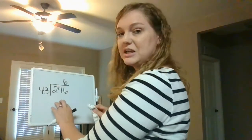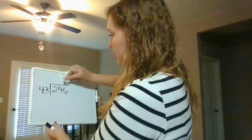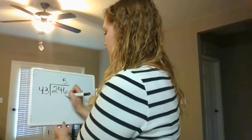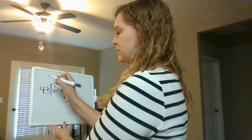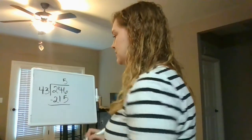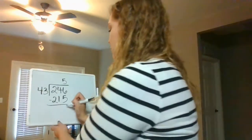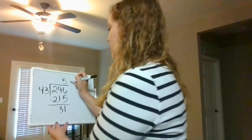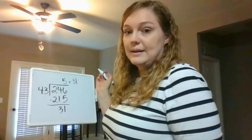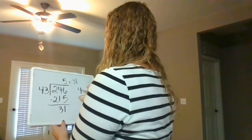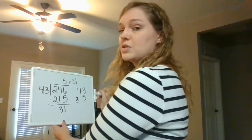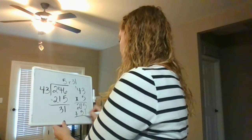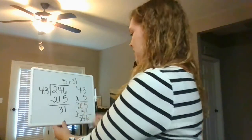When you get an answer that's too big, you have to start over and make the quotient digit smaller. So instead of 6, I'm going to put 5. Now: 5 times 3 is 15, carry the 1, and 5 times 4 is 20 plus 1 is 21. Now I can subtract: 6 minus 5 is 1, 4 minus 1 is 3, and 2 minus 2 is 0. Since 31 is smaller than 43, it can be our remainder. So our answer is 5 remainder 31. Let's check: 43 times 5 — 3 times 5 is 15, carry the 1, 4 times 5 is 20 plus 1 is 21. Then 215 plus 31: 5 plus 1 is 6, 1 plus 3 is 4, and 2. We get 246 and we did it right.